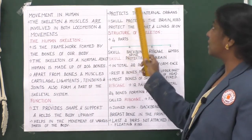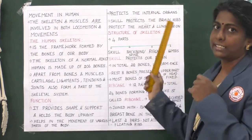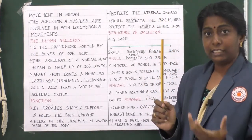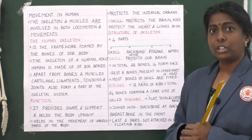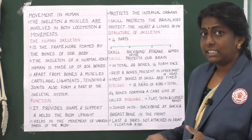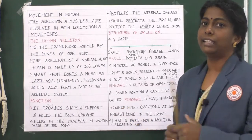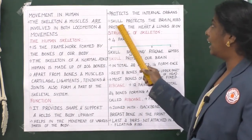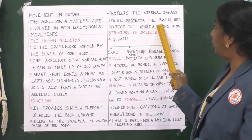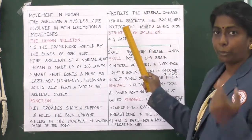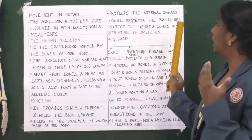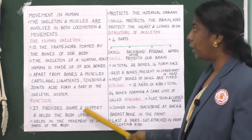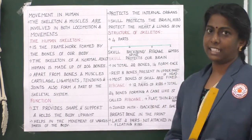The skeleton also protects the internal organs. We have internal organs like the brain, kidney, liver, and many others. The skeleton protects these internal organs. For example, the skull protects the brain, and the ribs protect the heart and lungs.